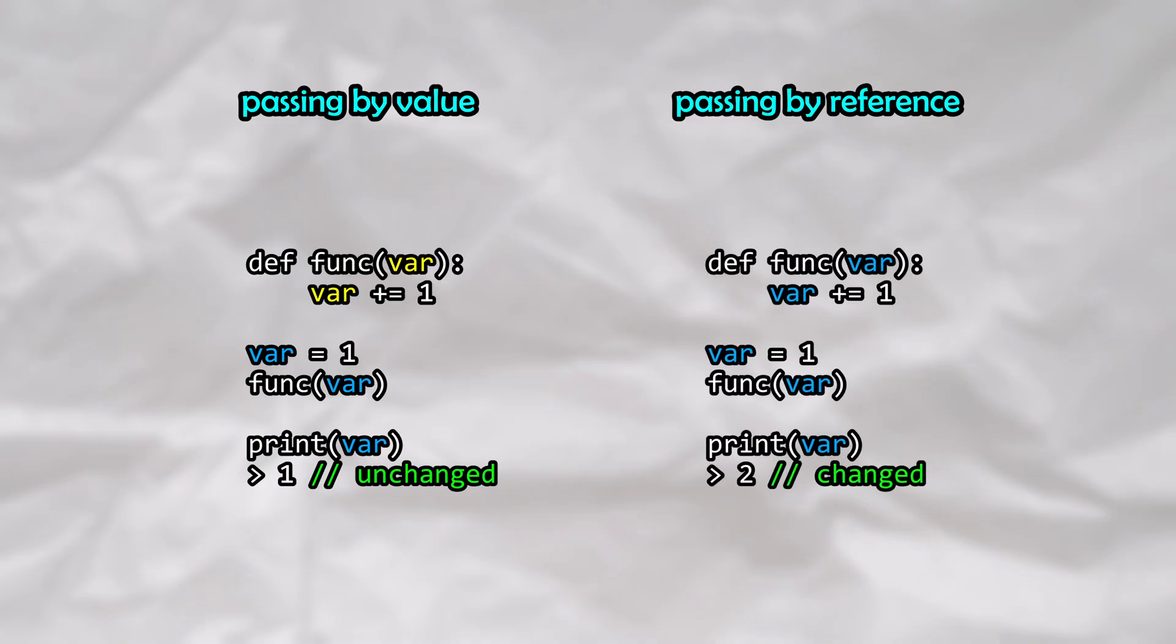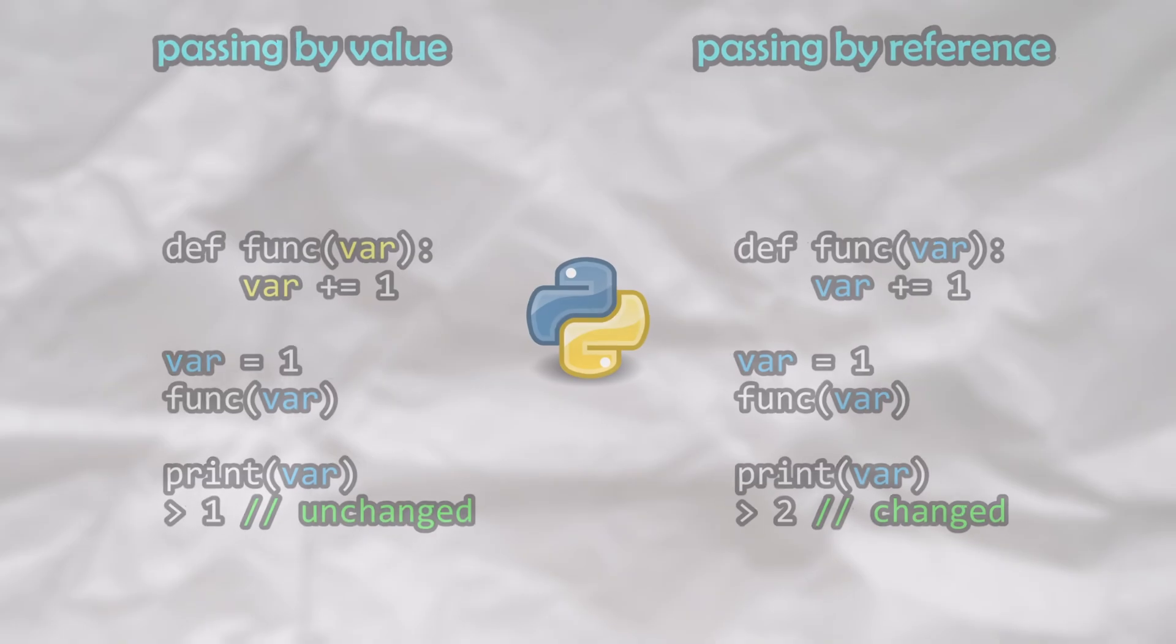This is in contrast to pass by reference, where a reference to the original variable is passed into the function instead. This means that modifications made within the function will affect the original variable. Now, here's the punchline. If I asked you if a language such as Python is passed by value or passed by reference, what would you answer?